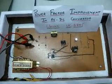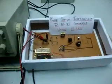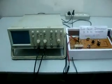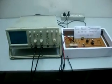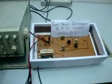When the power factor is not equal to 1, it is an indication that the current waveform does not follow the voltage waveform. The closer the power factor is to 1, the closer the current waveform follows the voltage waveform.